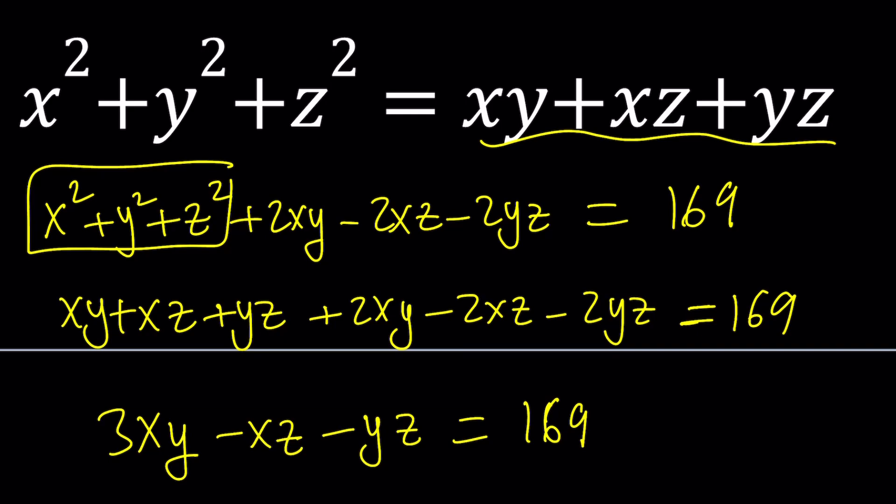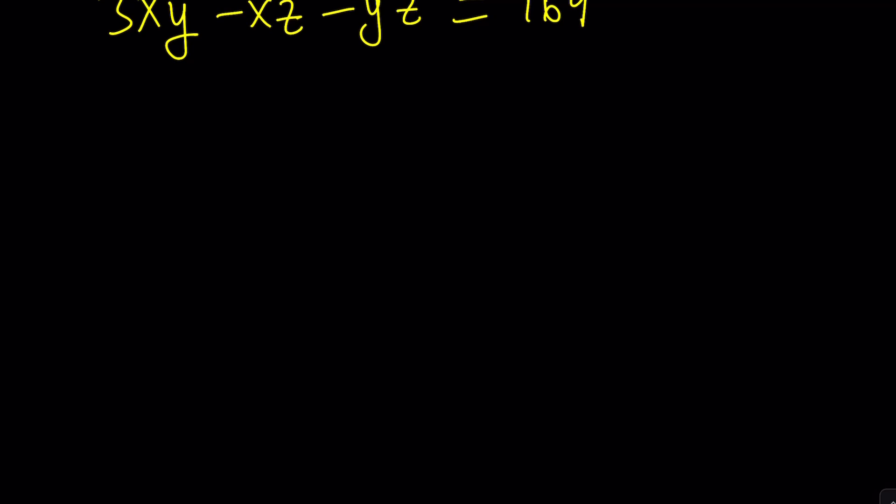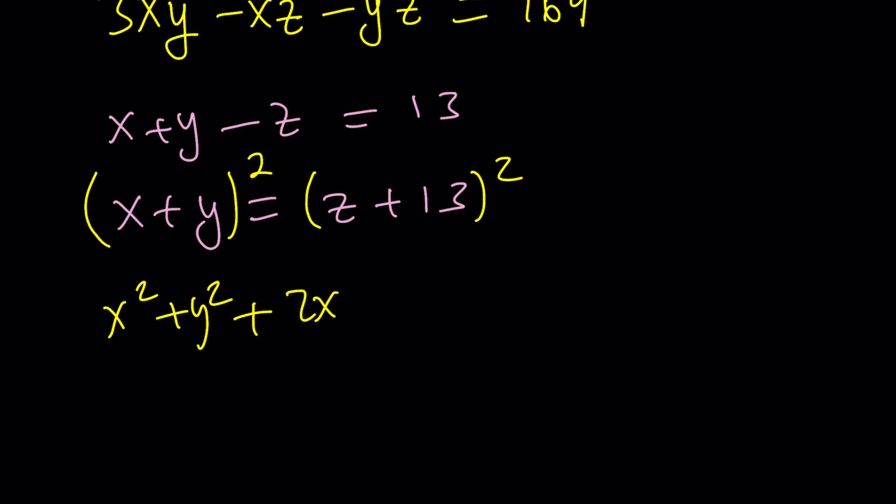So, what else can I do? So, this didn't really give me anything helpful. Maybe I should isolate the z, or x plus y. So, we have x plus y minus z. So, let's go ahead and isolate the x plus y. And then, hopefully, I can just square both sides and get something helpful. If I square this, I get x squared plus y squared plus 2xy. And from here, I get z squared plus 26z plus 169.